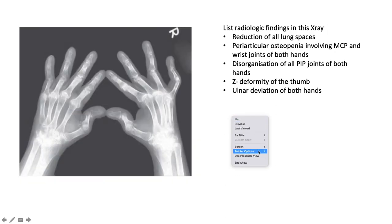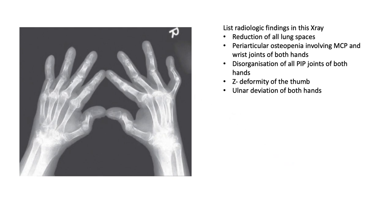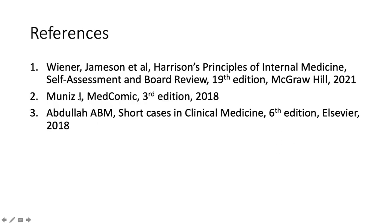This X-ray of the hands shows reduction of all joint spaces, periarticular osteopenia flanking the joints involving the metacarpophalangeal and wrist joints of both hands, disorganisation of all the PIP joints on both hands, Z-shaped deformity of the thumb bilaterally, and ulnar deviation of both hands. This is rheumatoid arthritis.